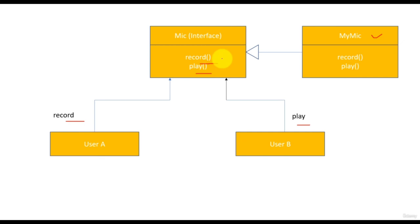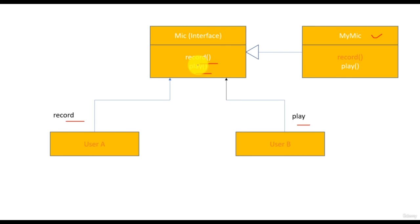Now let us say all this software is implemented in a compiled language, for example Java. If there is a change in the record method in the interface, the class myMic and interface Mic will need to be recompiled. Since the interface Mic is changing for the method record, the classes userA and userB will also need to be recompiled as they are using this interface. UserA needs to be recompiled since it is using the method record, but the compilation of the userB class is not necessary as it is only using the method play. This problem is happening because the interface segregation principle is not followed.